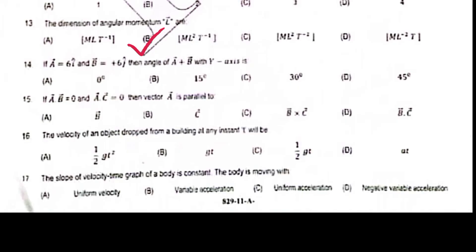If A equals 6i vector and B equals 6j vector, then angle of A plus B with y-axis is 45 degrees. If A dot B equals 0 and A dot C equals 0, then vector A is parallel to B cross C.